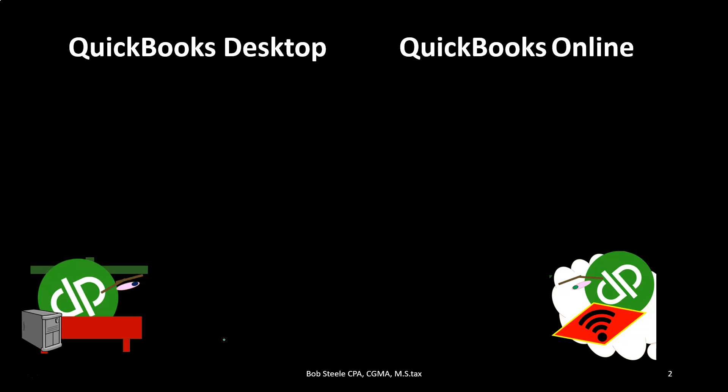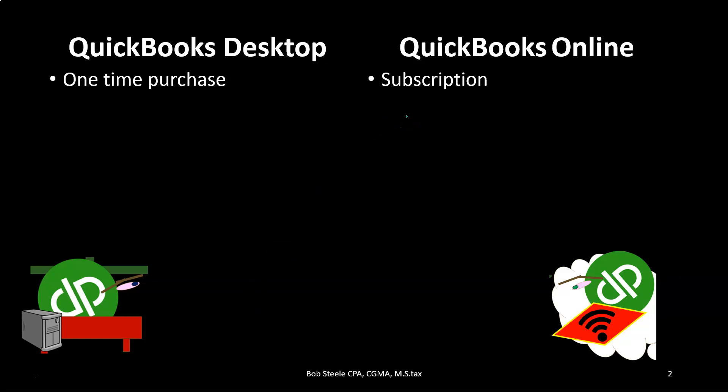They made substantial changes to the desktop, and a lot of traditional bookkeepers like the desktop version. Let's go through some of the factors. One: the desktop version is going to be a one-time purchase, whereas the online version is going to be a subscription model — you pay monthly or you pay yearly.